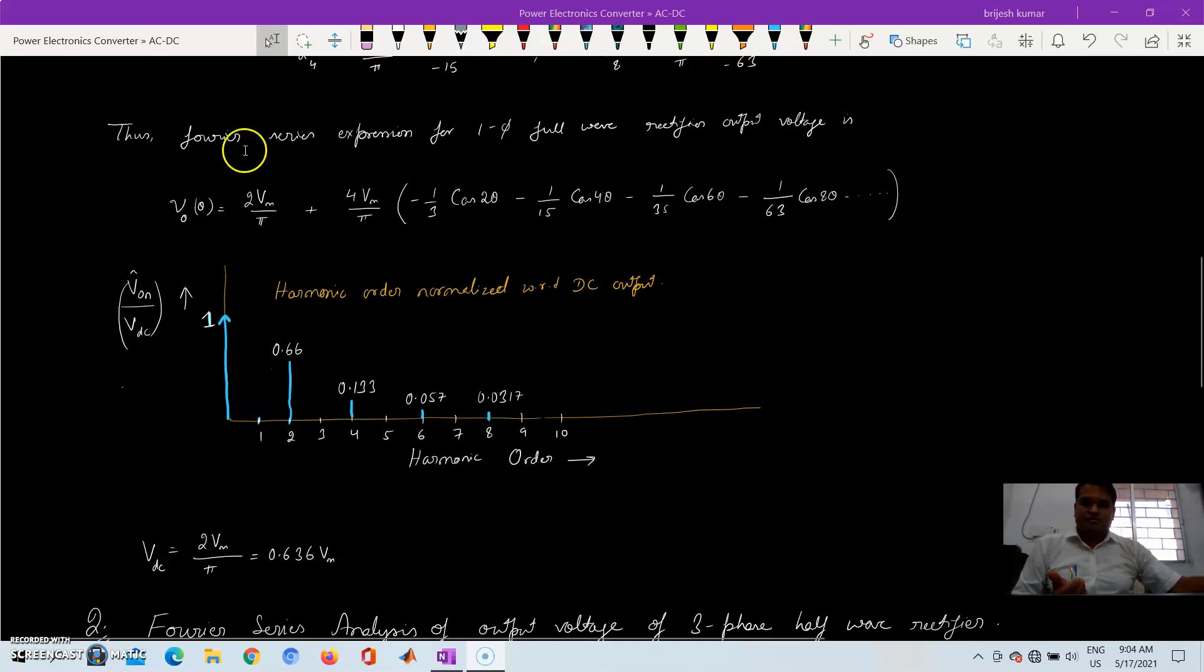So to keep in mind the Fourier series expression for single phase full wave rectifier output voltage is this, where we get a DC and all the AC terms which are even in number. So thank you very much. I hope this will be useful for you.